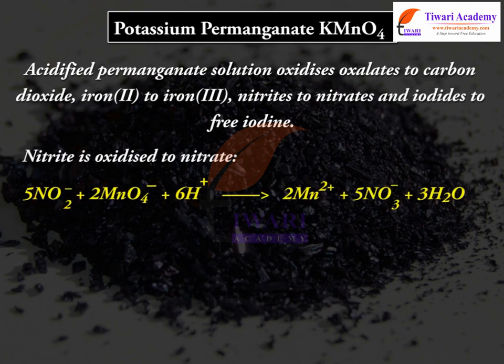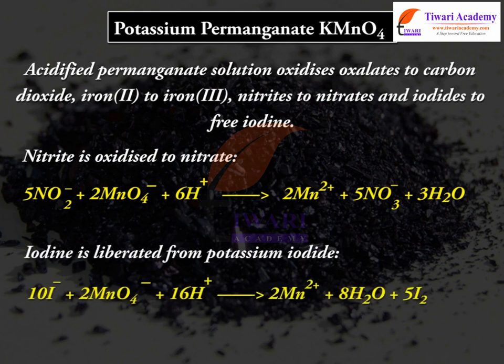Nitrite is oxidized to nitrate: 5NO₂⁻ + 2MnO₄⁻ + 6H⁺ → 2Mn²⁺ + 5NO₃⁻ + 3H₂O. Iodine is liberated from potassium iodide: 10I⁻ + 2MnO₄⁻ + 16H⁺ → 2Mn²⁺ + 8H₂O + 5I₂.